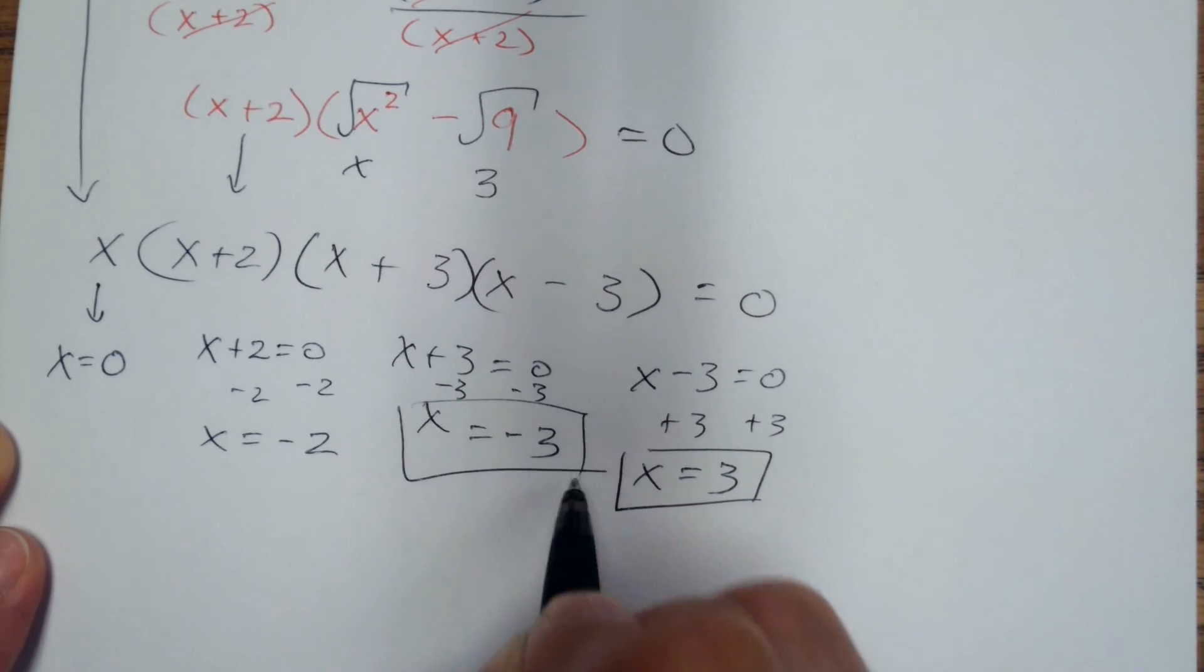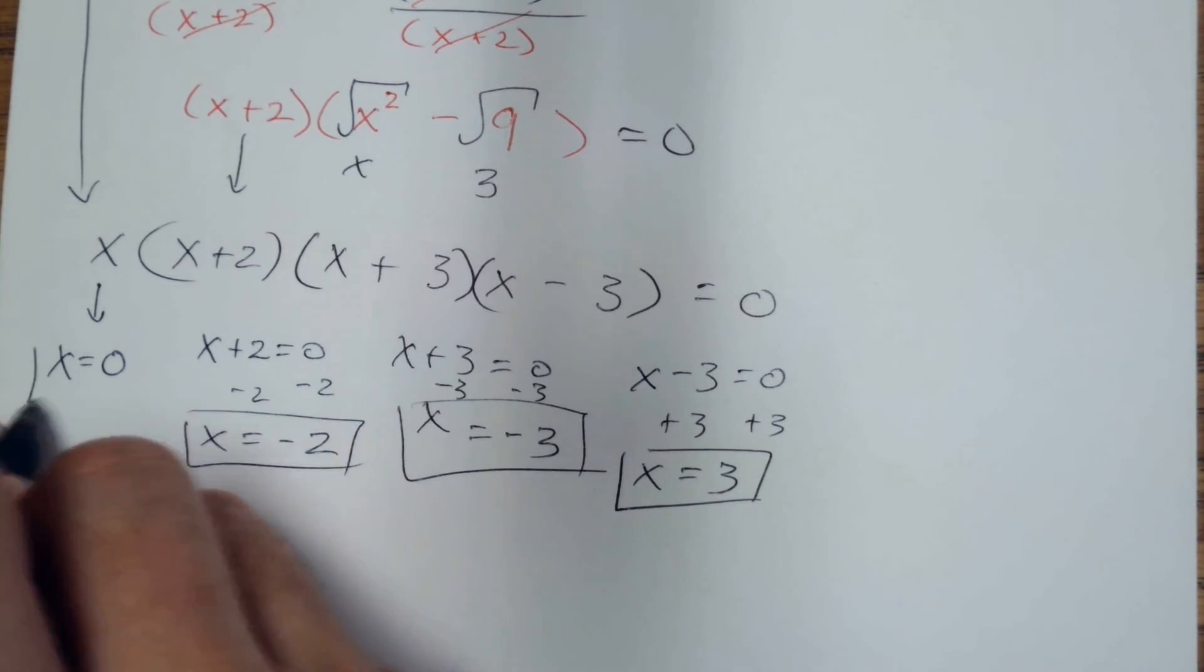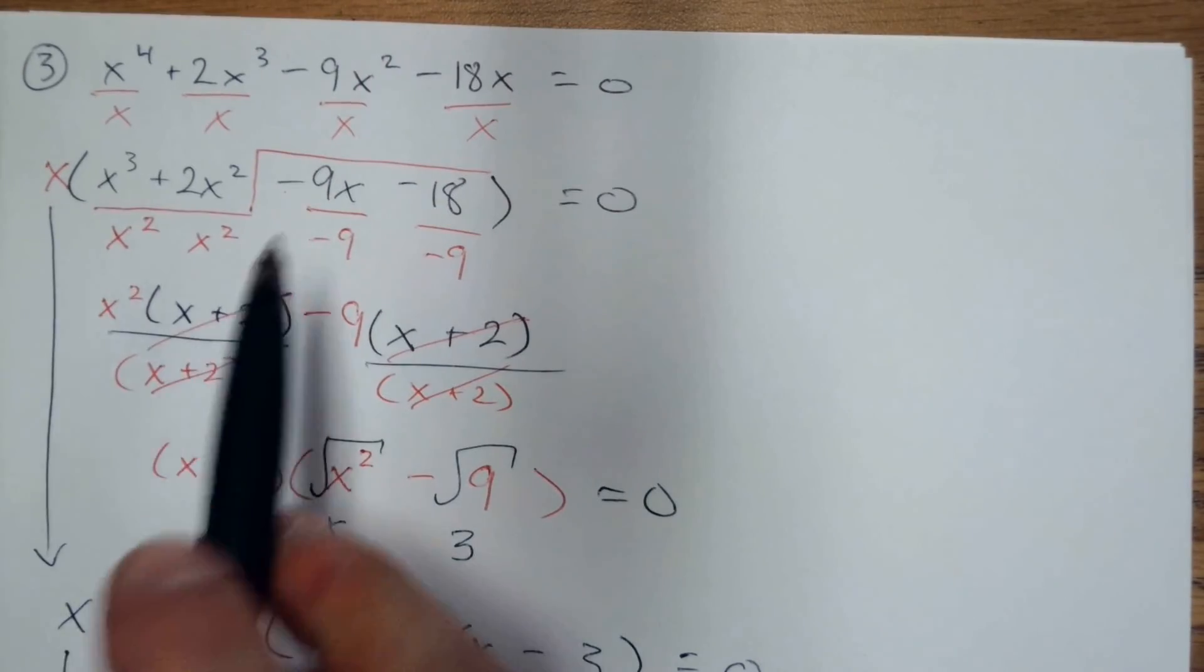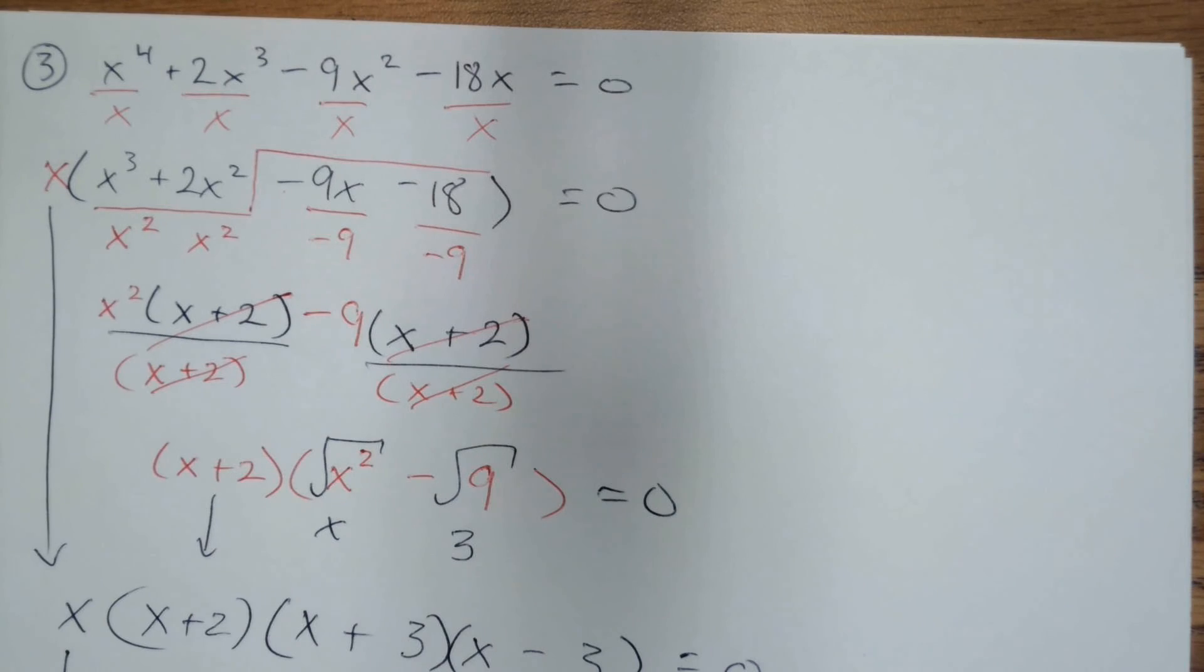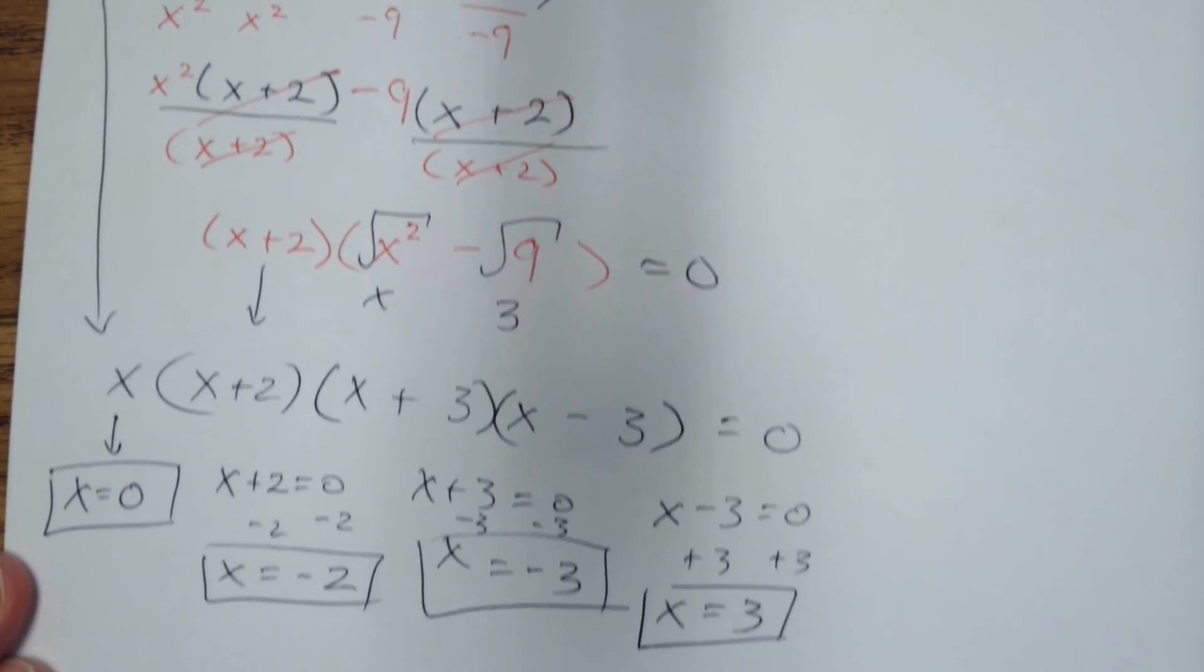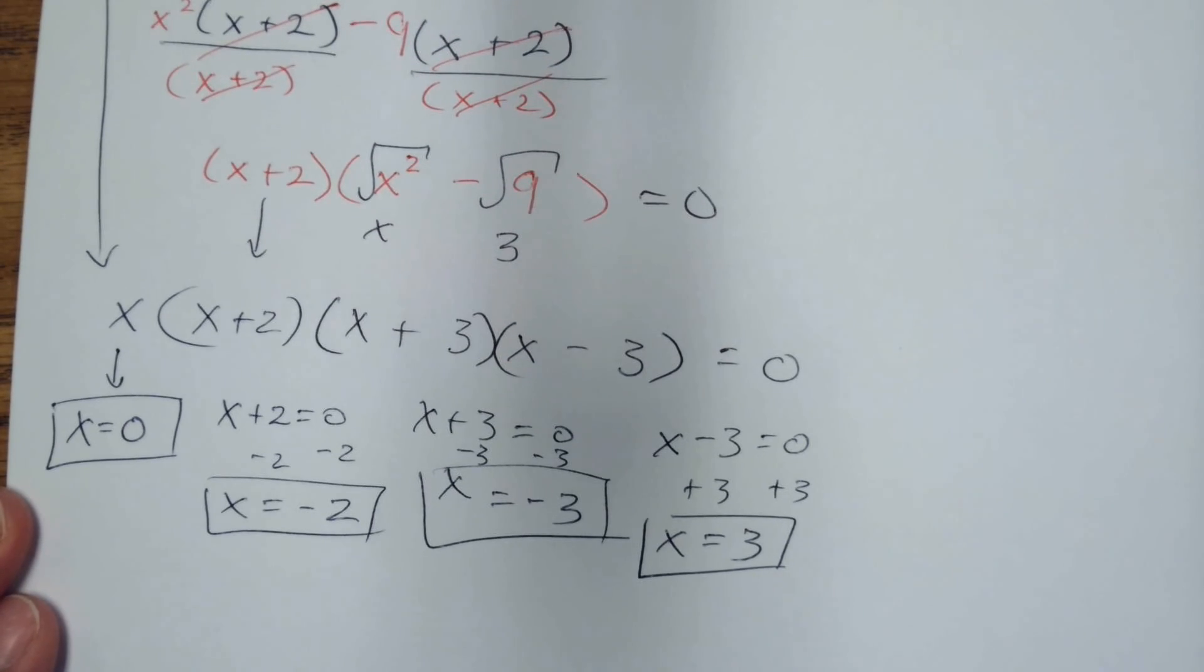So I do have four answers for this one, because I had my largest exponent, 4. I had a degree 4 polynomial. Question? Do you have to factor out from the whole equation, or can you just start with grouping? You could start with grouping.